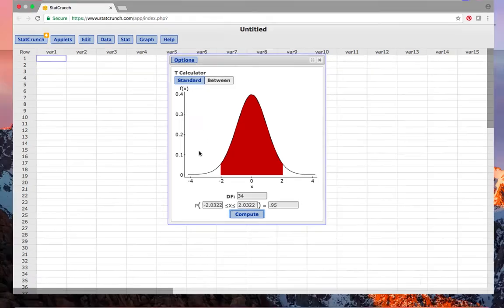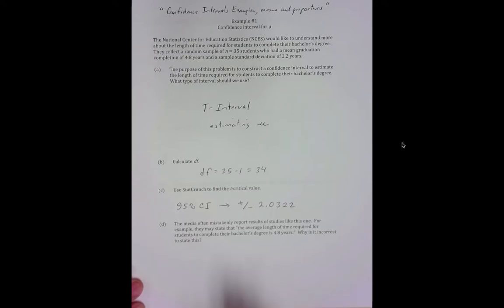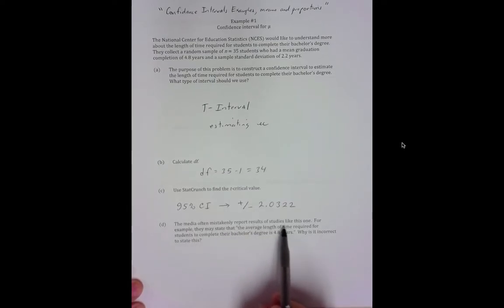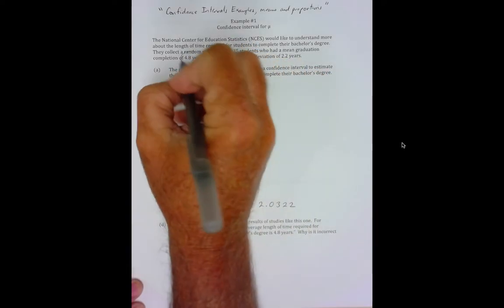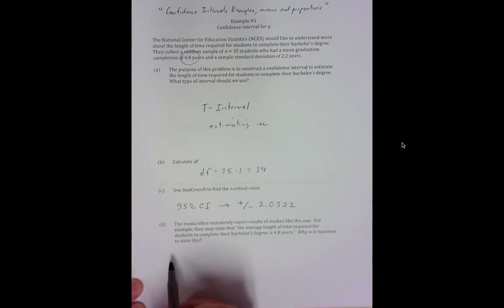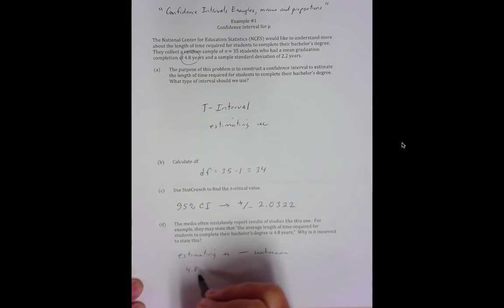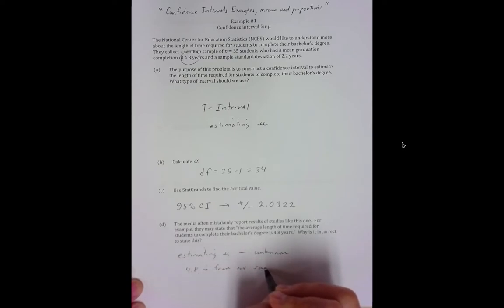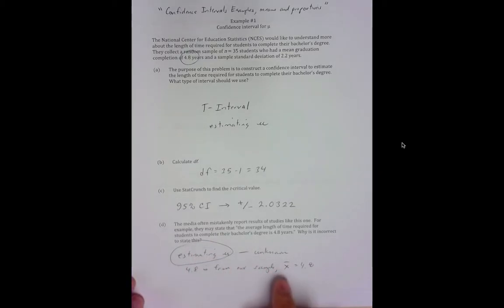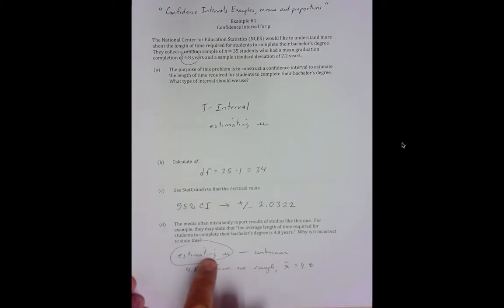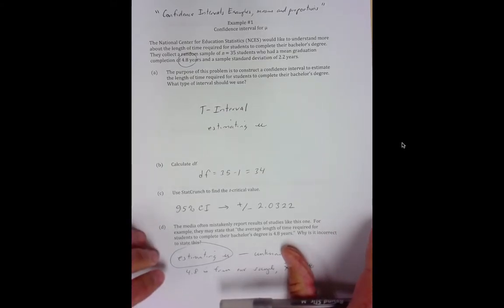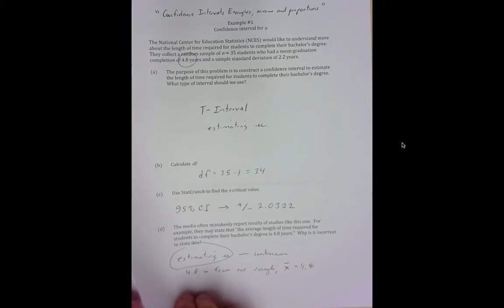The media often mistakenly reports results of studies like this one. For example, they may state that the average length of time required for students to complete their bachelor's degree is 4.8 years based on the information we got from our sample. Why is this incorrect to state? Well, we're estimating mu and mu is unknown. Furthermore, 4.8 is from our sample. So x bar is 4.8. We are trying to estimate mu. We don't know mu. So it's wrong because they're assuming that the sample mean is going to be equal to the population mean. Most likely it's not.